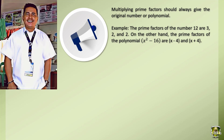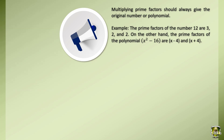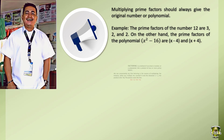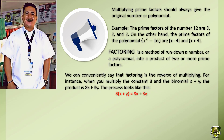Example: the prime factors of the number 12 are 3, 2, and 2. On the other hand, the prime factors of the polynomial x² minus 16 are x minus 4 and x plus 4. Factoring is a method of breaking down a number, or a polynomial, into a product of two or more prime factors. We can conveniently say that factoring is the reverse of multiplying.